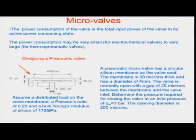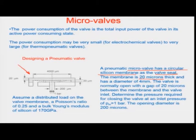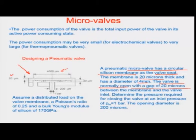Some of the parameters are that the micro valve has a circular silicon membrane which acts as a valve seat. The membrane is about 20 microns thick and has a diameter of about 4 mm. The valve is normally open with a gap of 20 microns — this distance right here between the membrane and the valve inlet, which is the inlet.